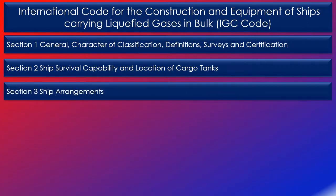Section 3 on ship arrangement sets out the requirements for segregation of cargo areas, accommodation, service and machinery spaces, and control stations. It also sets the requirements for cargo pump rooms, cargo compressor rooms, cargo control rooms, access to spaces in the cargo areas, airlocks, bilge, ballast, and fuel oil arrangements.